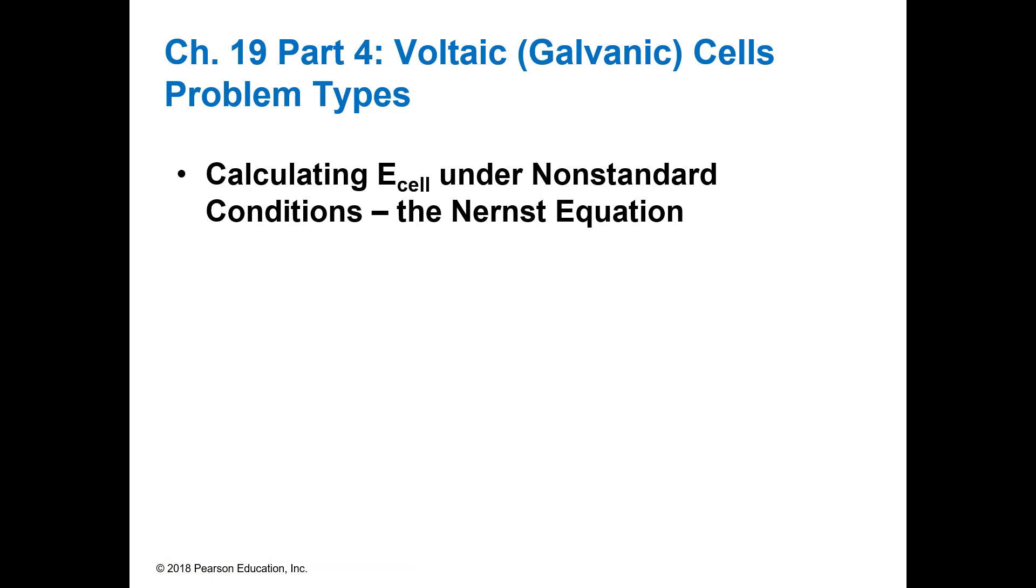In the previous sections we've been looking at standard conditions, using E⁰ for the cathodes and anodes and calculating the overall cell potential. In this part we are going to look at what if we don't have standard conditions and how do we account for those changes. And so the quick answer is we use the Nernst equation.